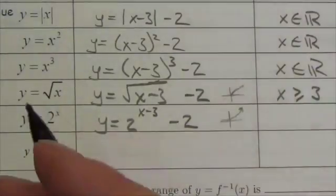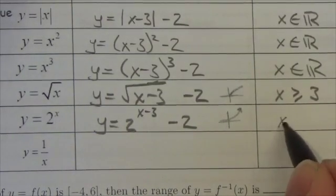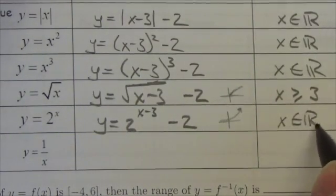Its domain is all reals. Now translating this to the right, translating it down, is not going to change the fact that its domain was all reals.